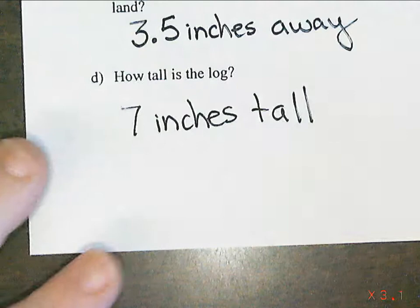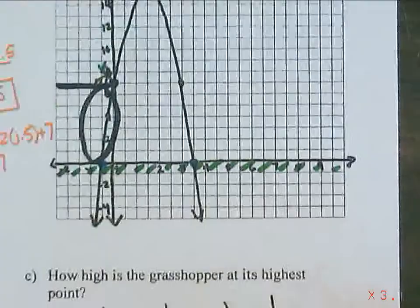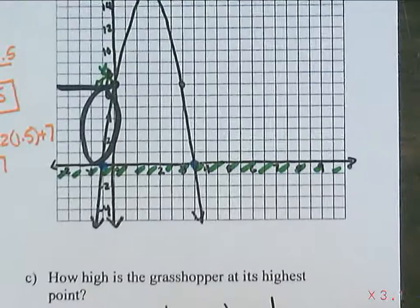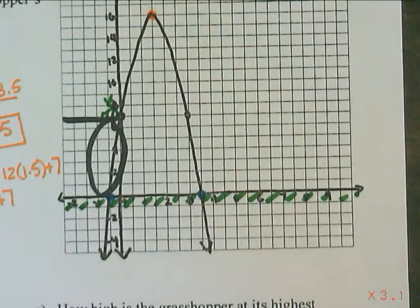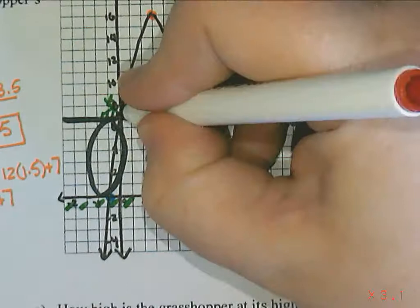And the very last part says state the domain and range for the relevant part of the function. So we're going to just take a look at this grasshopper one more time. He starts on the log, and he jumps, and then he lands on the ground. So there are parts of this parabola that don't make sense. First of all, we don't care about the part of the parabola before he jumps. We just care about the part after he starts jumping. He goes up. He comes down. And as far as I know, grasshoppers don't drill down into the ground, so he probably stops when he hits the ground. So in terms of the domain, we're looking at a distance of 0 to a distance of 3.5.